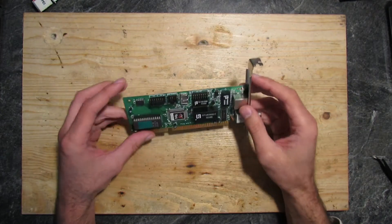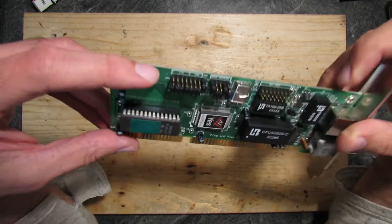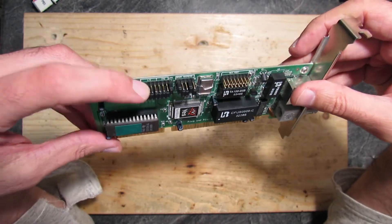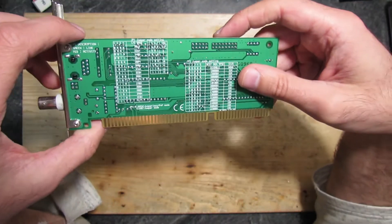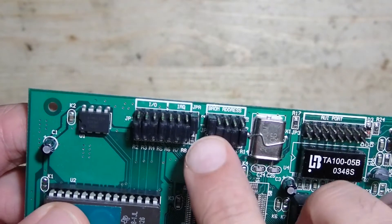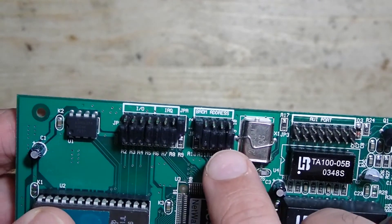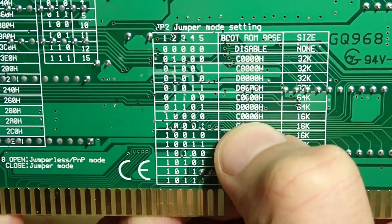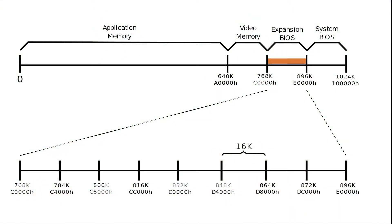Back to the network adapter, which we are using for our XT IDE universal BIOS hack. It has multiple jumpers where you can set up different settings. Currently we are only interested in the address setting and will ignore the other jumpers. On the back of the network adapter we can find a table for the jumper settings, where 1 means jumper is shorted and 0 means jumper is open. Currently our jumpers are set to 1 0 0 0 0 0, which means C00000 — exactly the same address the mainboard uses for the video adapter BIOS. We obviously have an address conflict, and this is why we get a black screen with these settings.